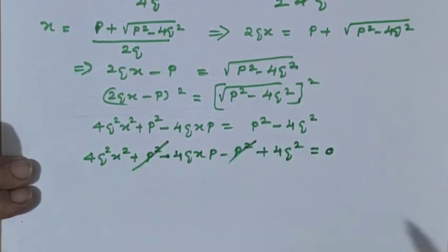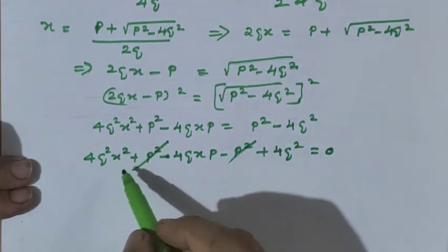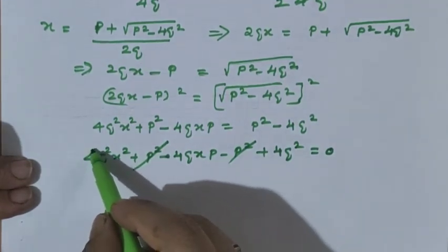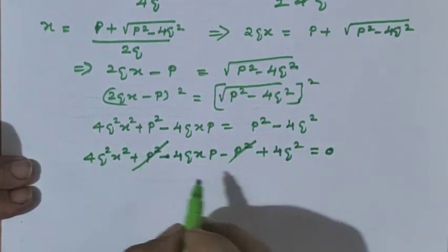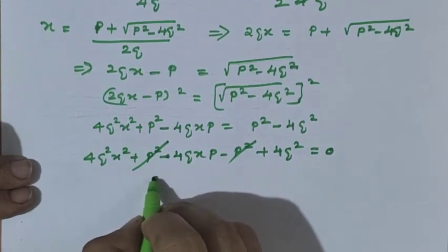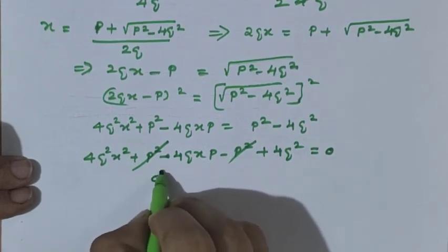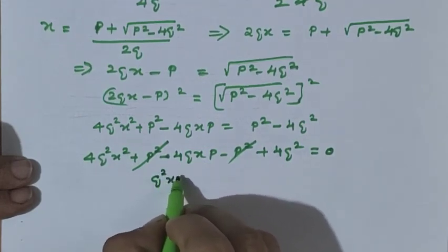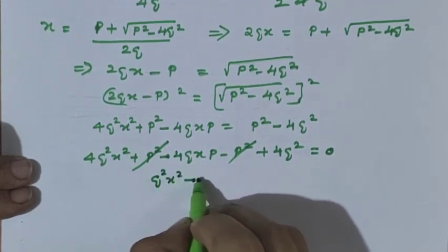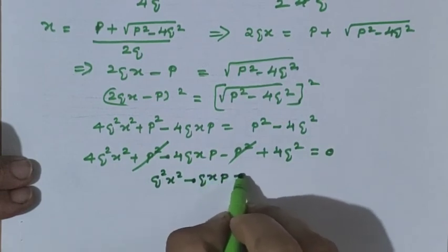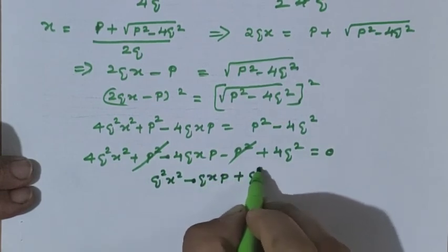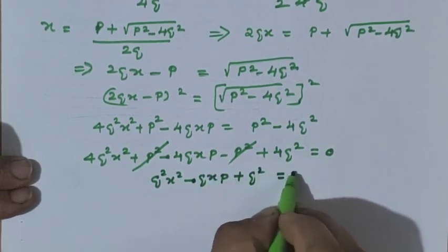Plus p squared and minus p squared cancel. All terms have factor 4, so we cancel 4. What remains: q squared x squared minus qxp plus q squared equals 0.